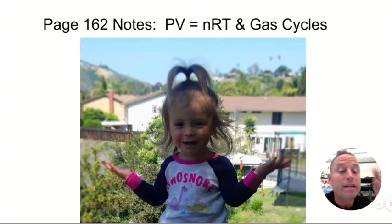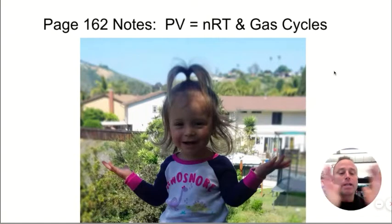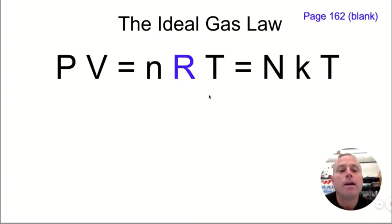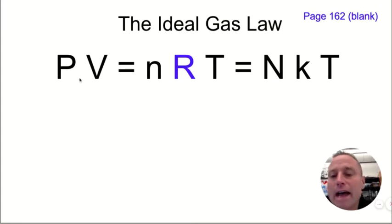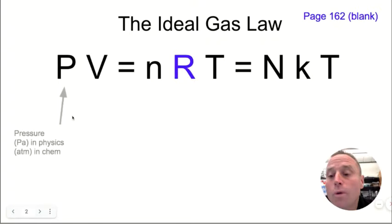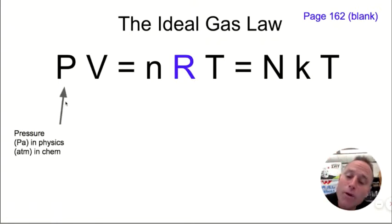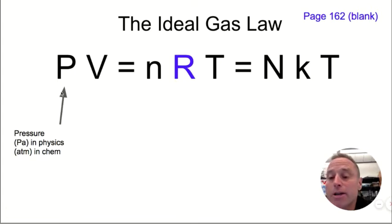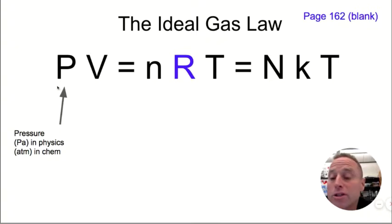We're going to be learning to read something called a PV diagram to learn what's happening to gases trapped in a container. So right up at the top, put down the ideal gas law. The ideal gas law is written as PV equals NRT — that's the version you see in chemistry.